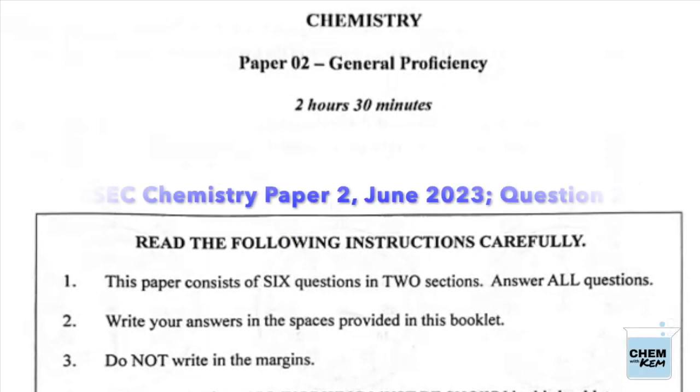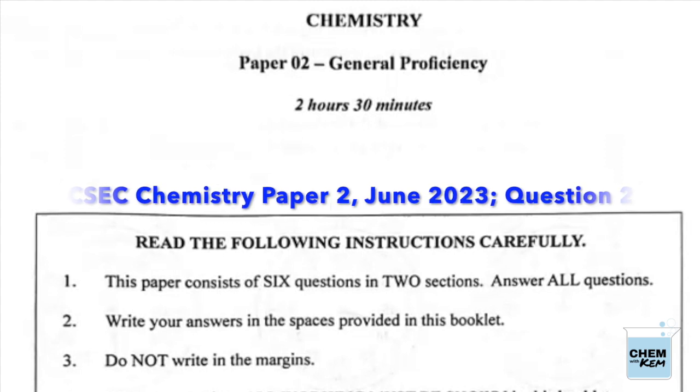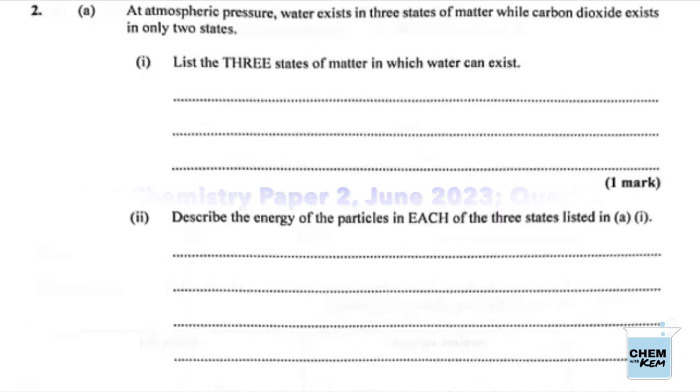This is the CXC CSEC Chemistry Paper 2 from May/June 2023. We're zooming in on question 2. Part 1 of A: At atmospheric pressure, water exists in three states of matter while carbon dioxide exists in only two states. One, list the three states of matter in which water can exist.